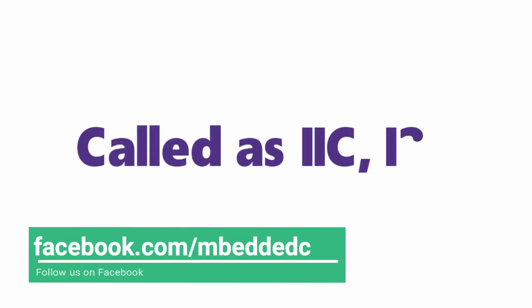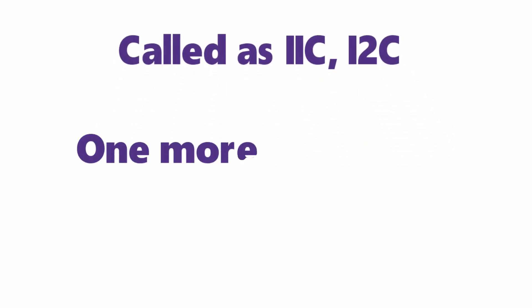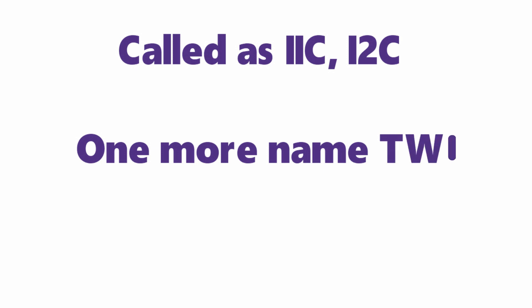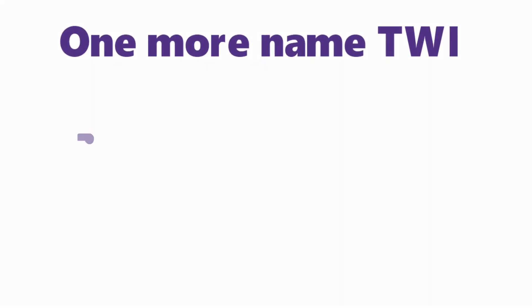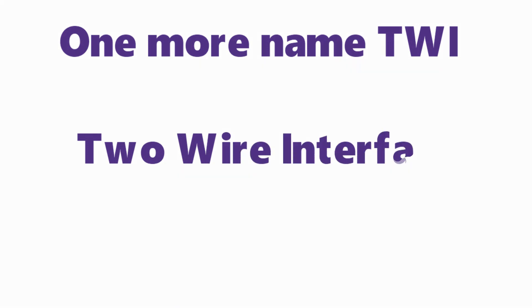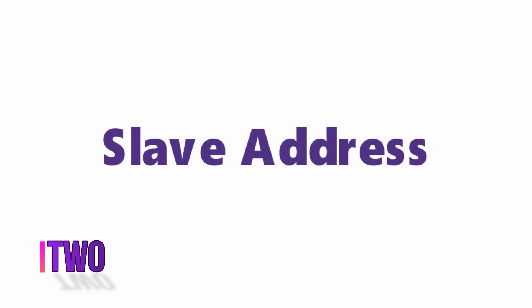The first secret is the name itself. I2C can be called IIC or I-squared-C, which stands for Inter-Integrated Circuit — that everyone knows. But it has one more name: TWI, which stands for Two Wire Interface. Atmel and other companies used this name to avoid trademark issues earlier, but now the term I2C is no longer trademarked.